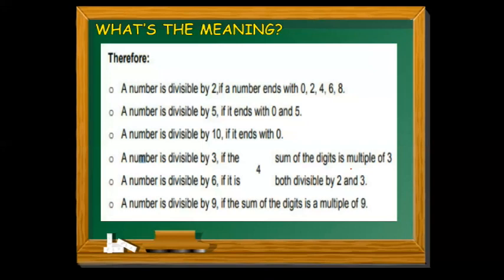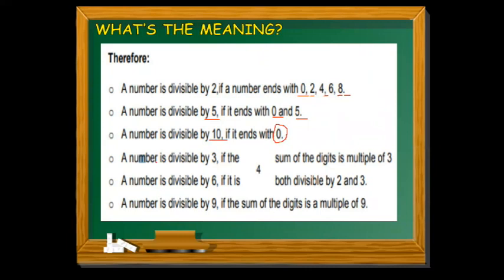So in summary: a number is divisible by 2 if it ends with 0, 2, 4, 6, or 8. A number is divisible by 5 if it ends with 0 or 5. A number is divisible by 10 if it ends with 0. A number is divisible by 3 if the sum of the digits is a multiple of 3. A number is divisible by 6 if it is divisible by both 2 and 3. And a number is divisible by 9 if the sum of the digits is a multiple of 9.